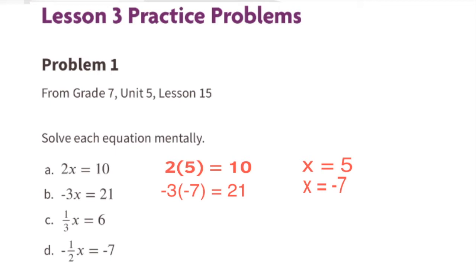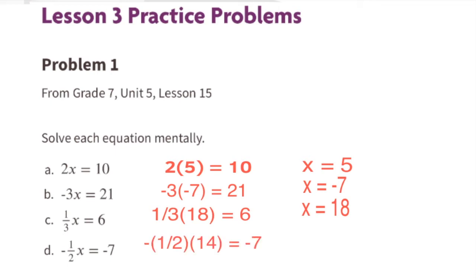C: 1/3 times x equals 6. That's a positive times a positive equals a positive, and 6 divided by 1/3 equals 18. I also know that 6 is 1/3 of 18, so x equals 18. D: negative 1/2 times x equals negative 7. A negative times a positive equals a negative, so x is going to be positive.